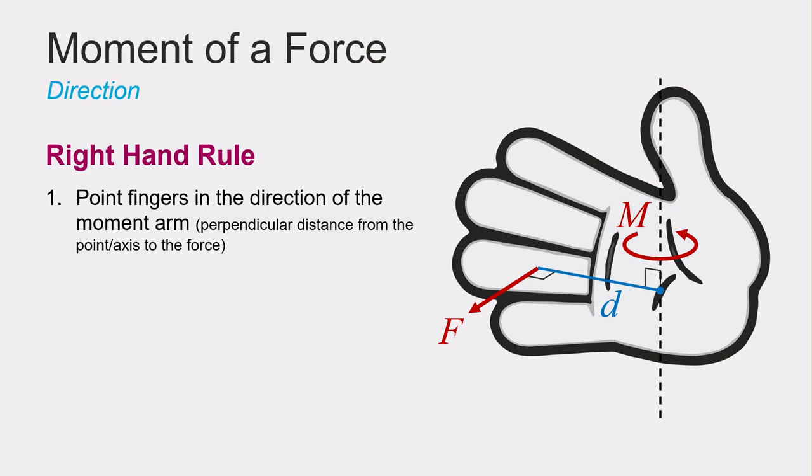To apply the right hand rule, all you need to do is point your fingers from the axis or the point where the moment is acting to the force that is causing the moment, along the moment arm d.